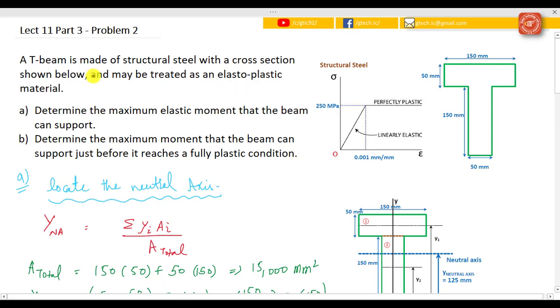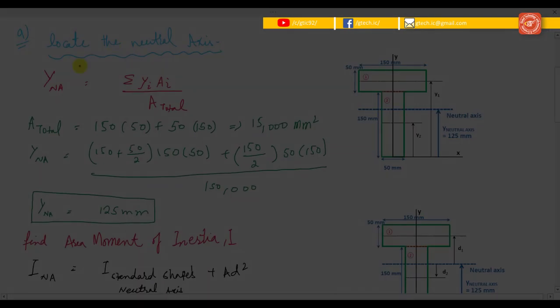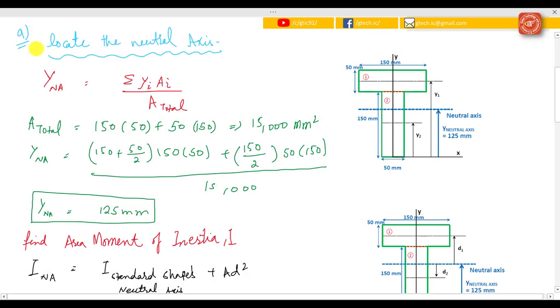Here's our situation: we have a T-beam that is made of structural steel with the cross section shown on the right hand side, and it may be treated as an elasto-plastic material. You have to determine the maximum elastic moment that the beam can support, and then determine the maximum moment that the beam can support just before it reaches a fully plastic condition.